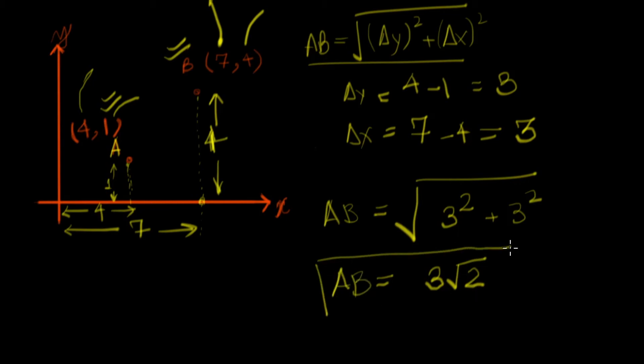Thus, we have found the distance between point A and point B as 3 root 2. That's the distance.